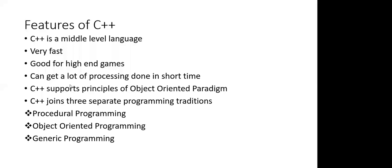The first paradigm is procedural programming. Procedural programming was implemented in C, where the coding of a program is done following a proper procedure such that all rules are followed, resulting in an error-free program. There is a proper procedure to write the program.